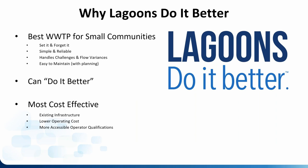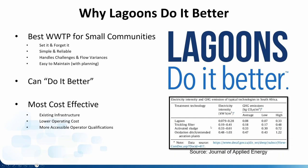Summarizing: why do lagoons do it better? They're the best situation for small communities. They're like a crock pot — turn it on and forget it. They're simple, reliable, and handle challenges and flow variations well. If somebody dumps a tanker of something down the drain, the lagoon won't get too upset — you can't do that to an activated sludge plant. Lagoons can also be made better than they are today with newer technologies. And they're the most cost-effective: most towns already have a lagoon system, lower operating costs, and a study from South Africa shows lagoons have the lowest electrical intensity at 0.08, compared to 0.48 for an oxidation ditch — a massive difference in power cost.